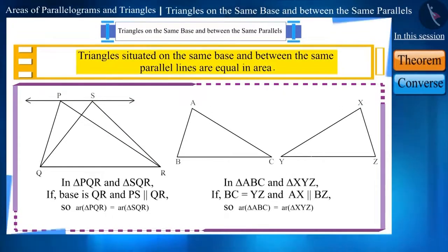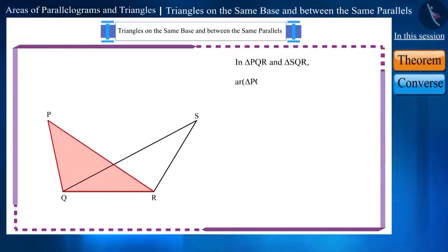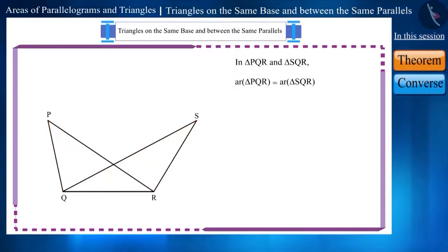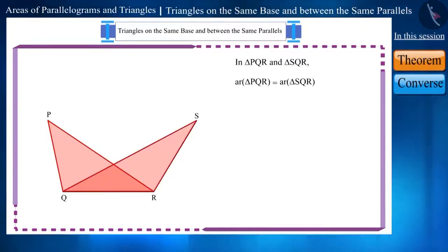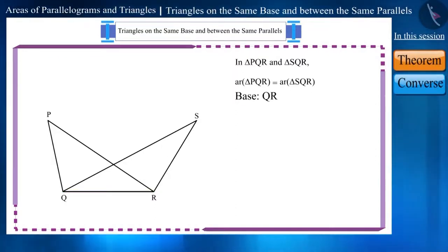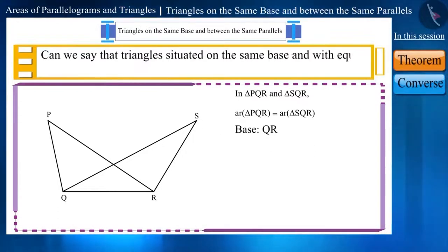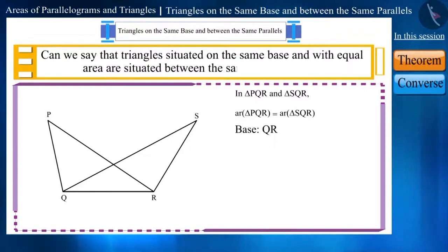Is the inverse of this theorem also true? Here, we are given a figure where the area of triangle PQR and triangle SQR is equal, and the base of the two triangles, QR, is also the same. Based on this given information, can we say that triangles situated on the same base with equal area are between the same parallel lines?